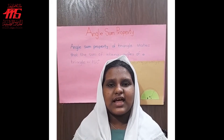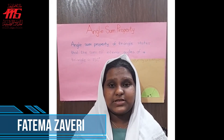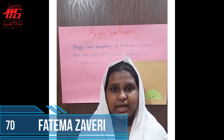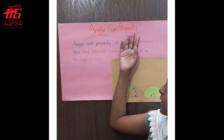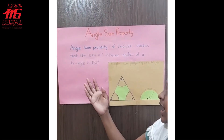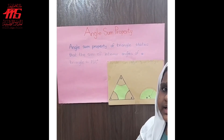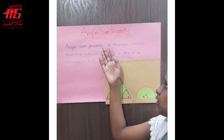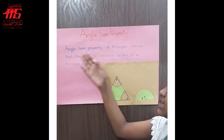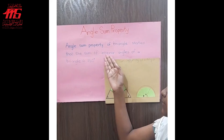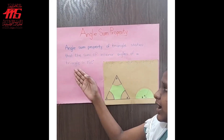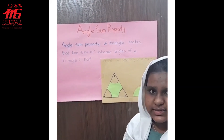Hello friends, let's explore shapes around the world. My topic is angle sum property. Angle sum property of a triangle states that the sum of interior angles of a triangle is 180 degrees.